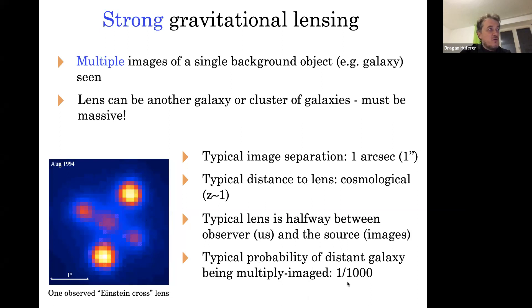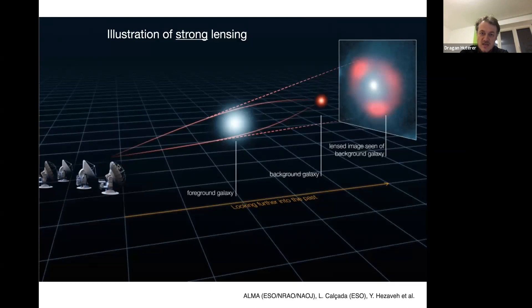The probability that a galaxy in the universe will be multiply imaged is about one part in 1000. So if you have a million images of galaxies, maybe 1000 of them will be multiply imaged — and we do have several hundred confirmed instances. Here's another picture: you have a source object, a lens, and here's us. There's only one source, but light goes this way and that way. Ideally it could even show up as a ring — the so-called Einstein ring — but most of the time you see multiple images, three or five.